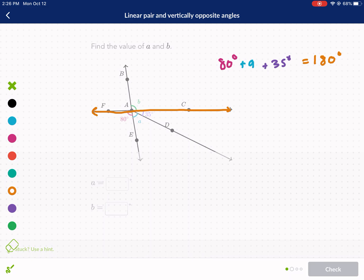So what we did here is 80 plus 35 is 115, so we're going to subtract 115 from both sides. And so we get angle A is equal to 65 degrees. There's our first one. This time, A and B are not vertical.